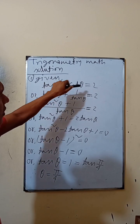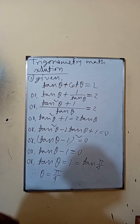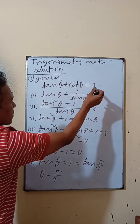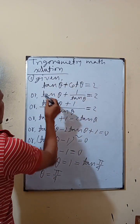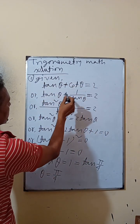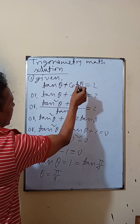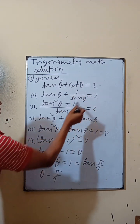Tan theta plus cot theta is equal to 2. Tan theta is equal to plus cot theta, that means one by tan theta.